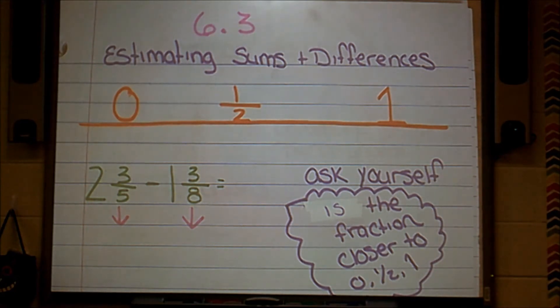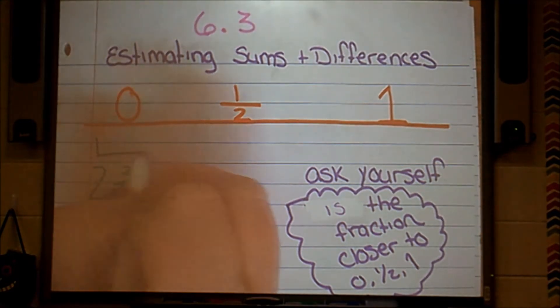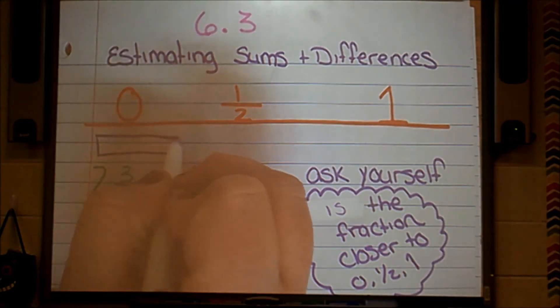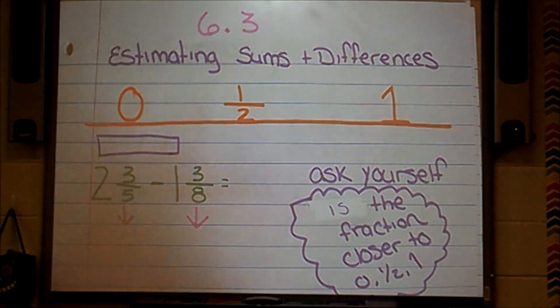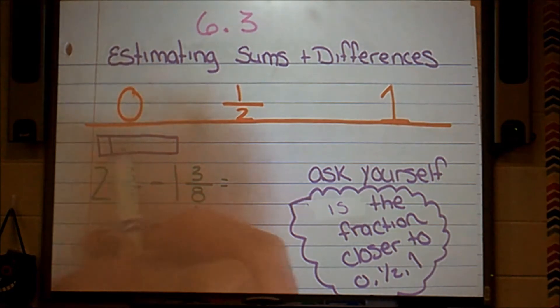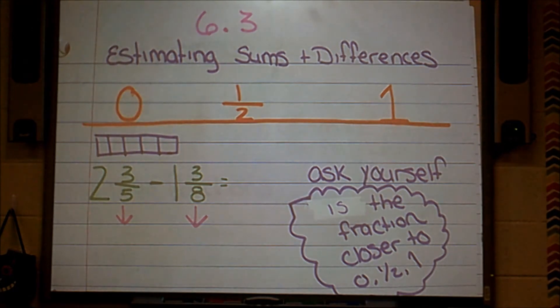I'm going to draw a picture of 3 fifths, and I'm going to see what I think. So here's my fraction bar, and I'm going to cut it into fifths. Now this fraction needs to be shaded in 3 fifths. So of those fifths, I'm going to color in 3 of them.